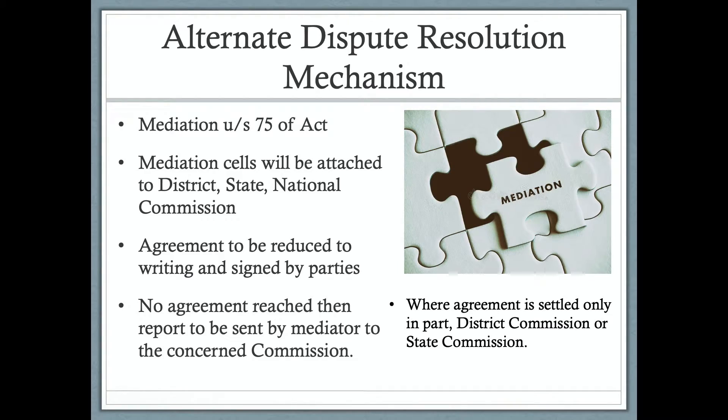Any appeal from the National Commission will go to the Supreme Court. For the first time, an alternate dispute resolution mechanism has been added — under Section 75 of the Act, mediation has been introduced. Mediation cells will be set up in district, state, and national commissions. Any settlement agreement must be reduced to writing and signed by the parties. If agreement is reached on only part of the dispute, the rest can be adjudicated by the forum. If no agreement is reached, the mediator sends a report to the concerned commission.